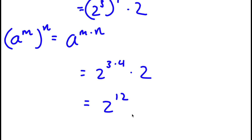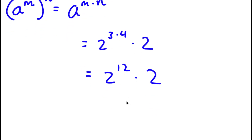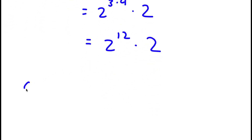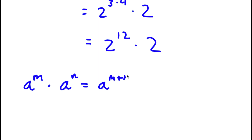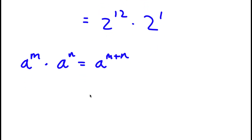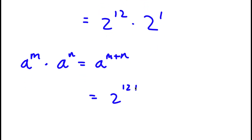So I have 2 to the power of 12 times 2. Now, if I have something in the form a to the power of m times a to the power of n, this is equal to a to the power of m plus n. In this case, 2 is the same thing as 2 to the power of 1, so I have 2 to the power of 12 times 2 to the power of 1, which equals 2 to the power of 12 plus 1, which is 2 to the power of 13.